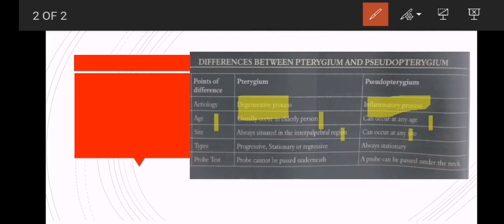There are progressive, stationary, or regressive types of pterygium, while pseudopterygium is always stationary.